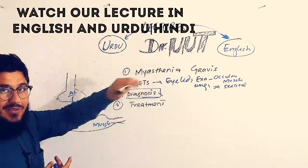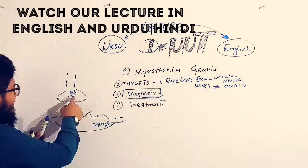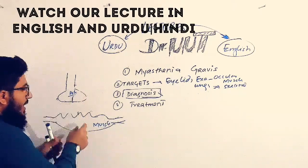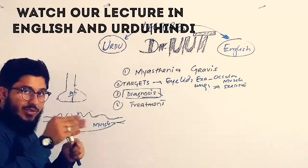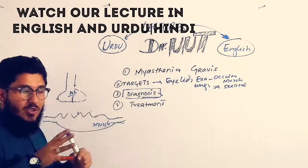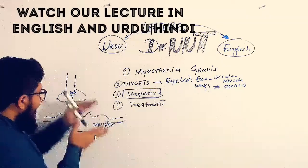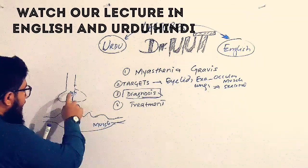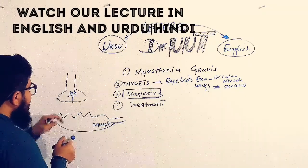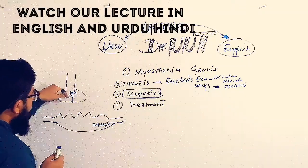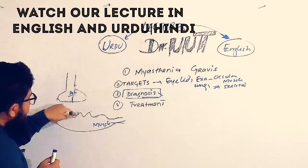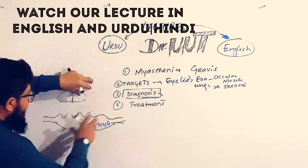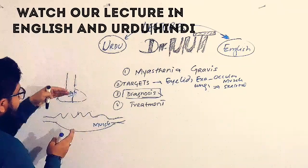This is actually an autoimmune disease. Acetylcholine is released from the nerve — we're talking about neurons supplying skeletal muscles or voluntary muscles. This acetylcholine, when released from the presynaptic neuron, will join the muscle at the neuromuscular junction.